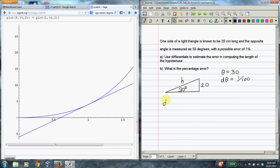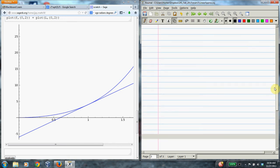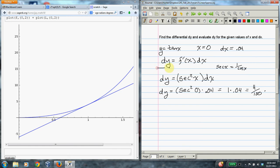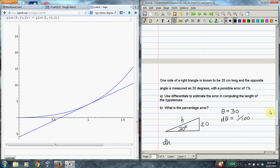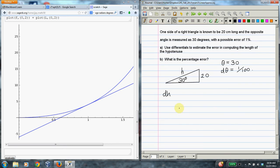Now we're supposed to use differentials to estimate the error in computing the length of the hypotenuse. So this is dh. So really, this is just an exercise just like the previous one, where all we have to do is use this formula. The letters are different. Instead of y and x, we have h and θ, but it's basically the same. So before we figure out dh, this is going to be h' times dθ.